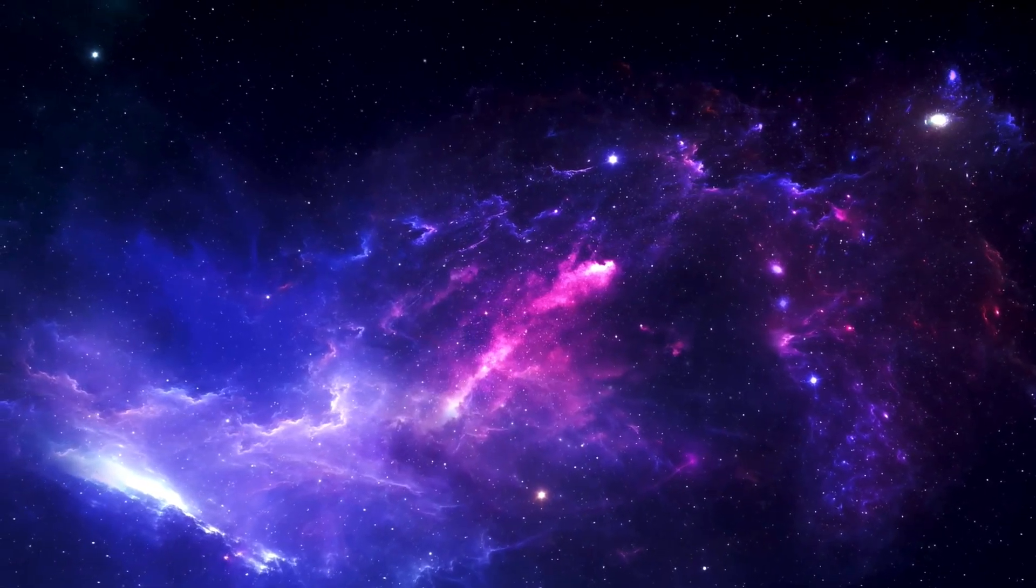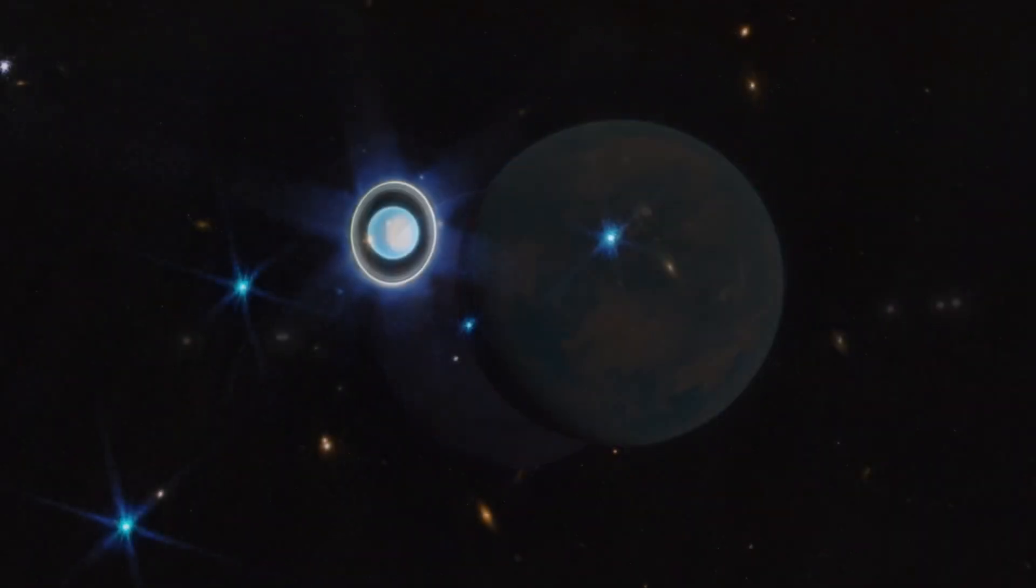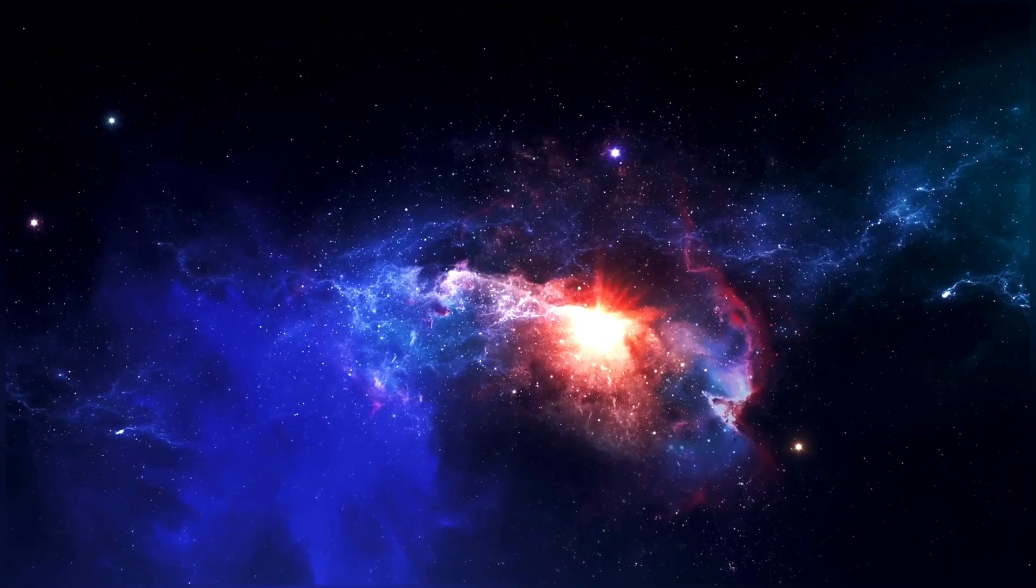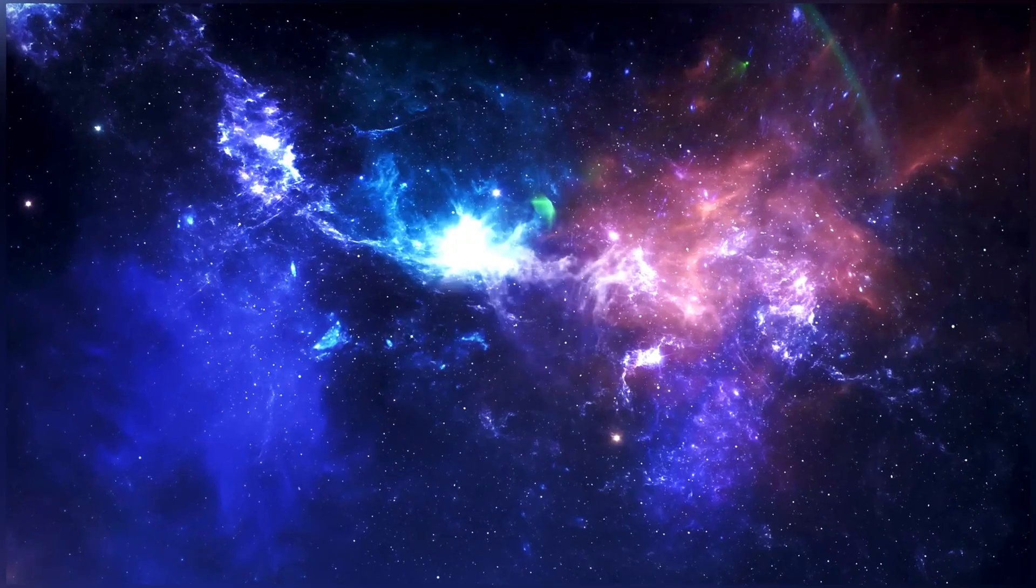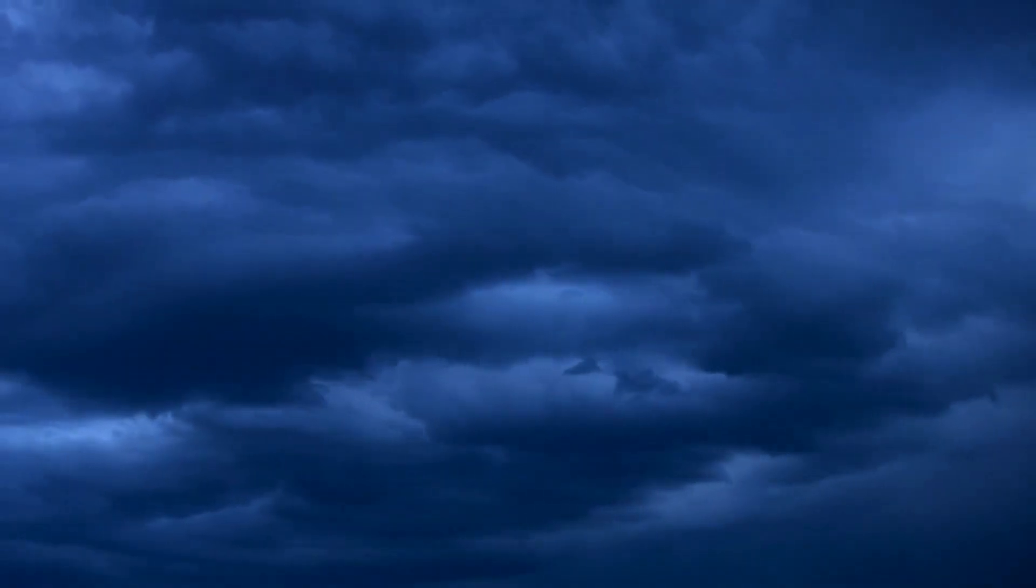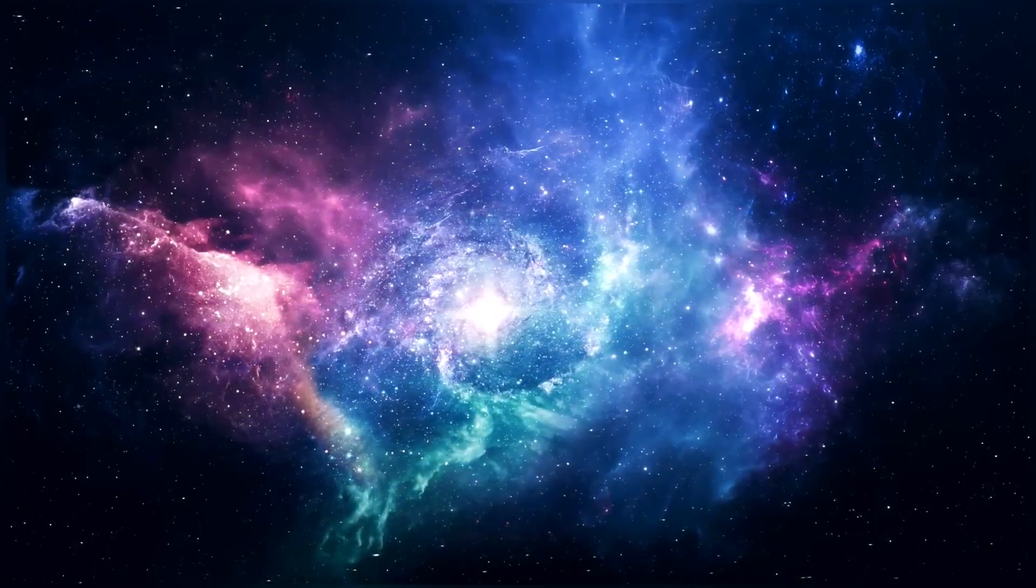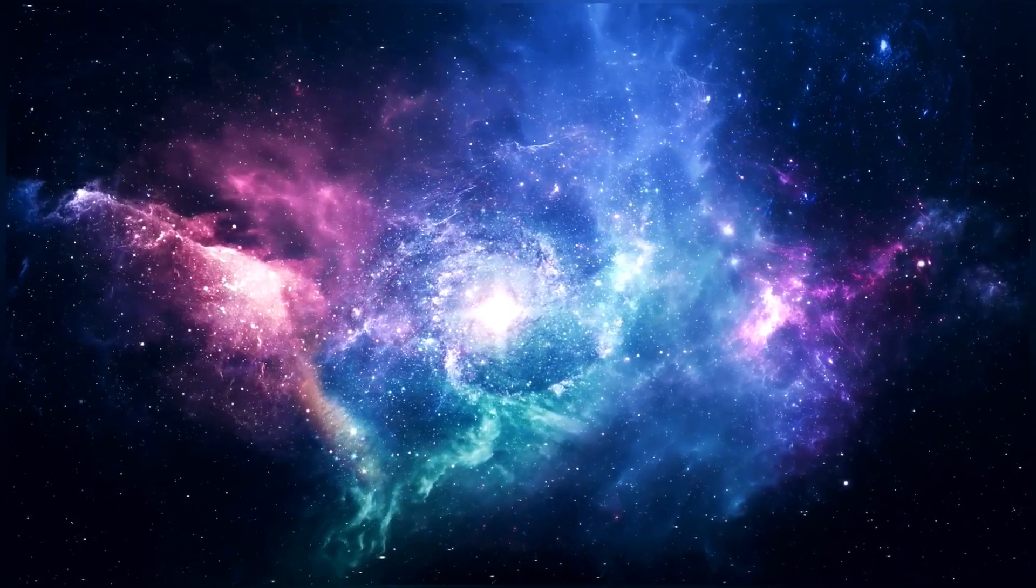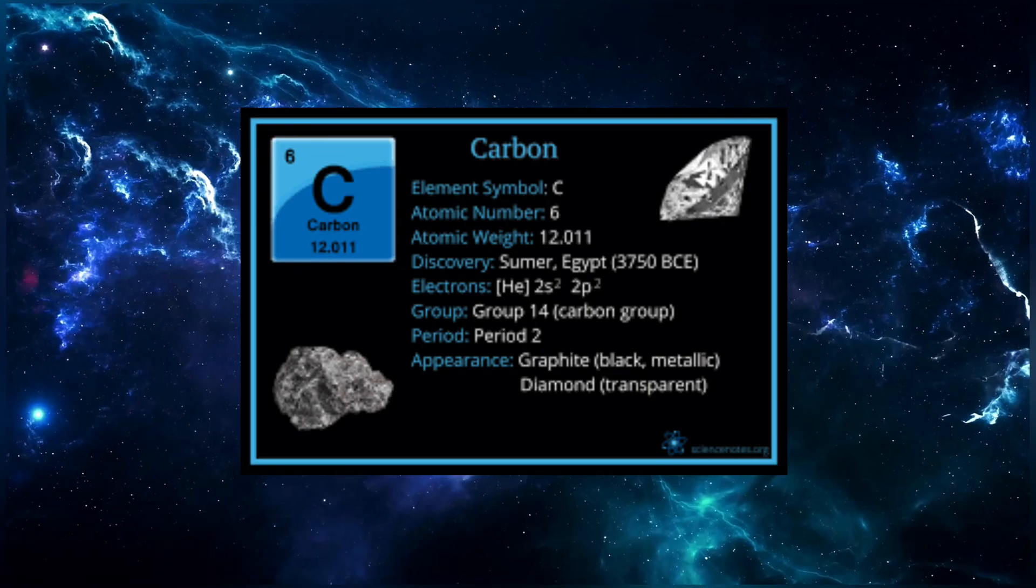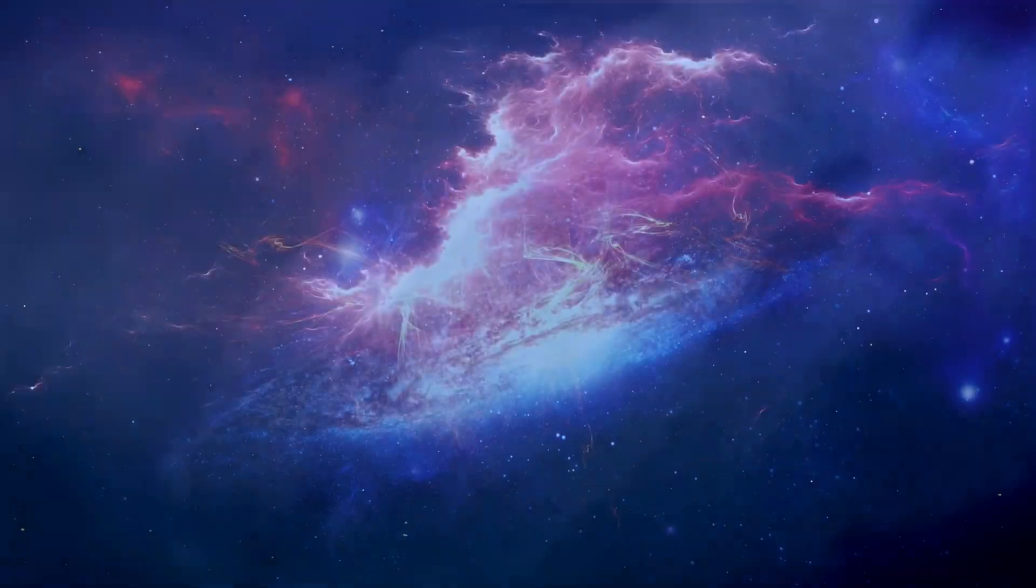Our journey begins on the frigid expanse of Uranus and Neptune, the ice giants of our solar system. Deep within these celestial behemoths, conditions beyond imagination give rise to a truly astonishing spectacle: diamond rain. Yes, you heard that right. The crushing pressures and scorching temperatures deep within these giants' atmospheres cause methane to morph into diamond raindrops. These glittering jewels descend through layers of gas and liquid, leaving us with a celestial phenomenon that feels straight out of science fiction.